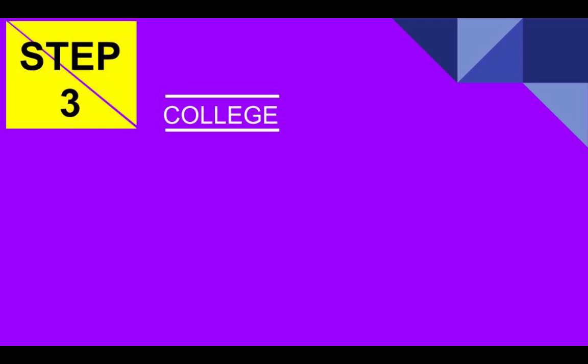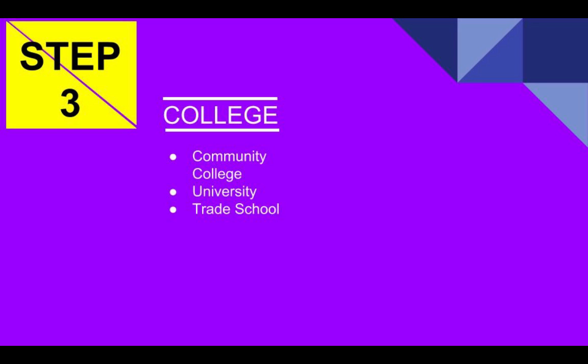Step 3. Develop a list of synonyms or other keywords related to the major concepts. For example, when talking about college, we could also try searching community college, university, or trade school. Being specific about what it is that we actually want to research will make the process a great deal easier.